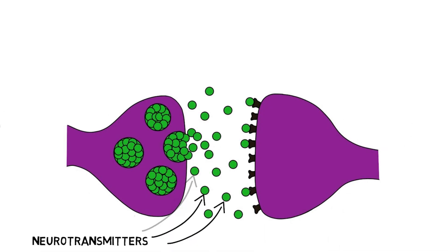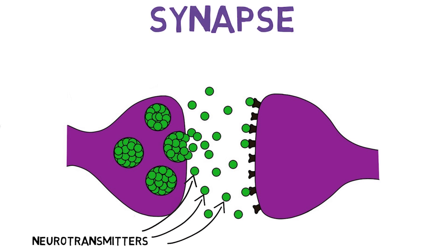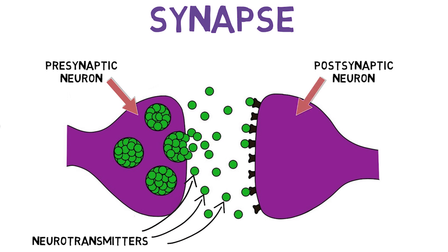Neurotransmitters are chemicals that neurons use to communicate with one another, primarily at specialized areas called synapses. Most synapses consist of a neuron that is sending a signal, called the presynaptic neuron, and a neuron that is receiving the signal, or the postsynaptic neuron, as well as a small space between the two called the synaptic cleft.